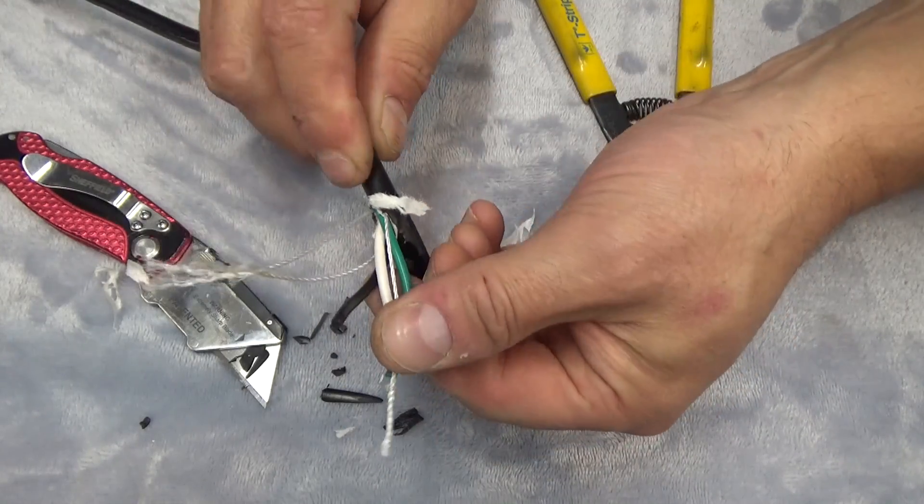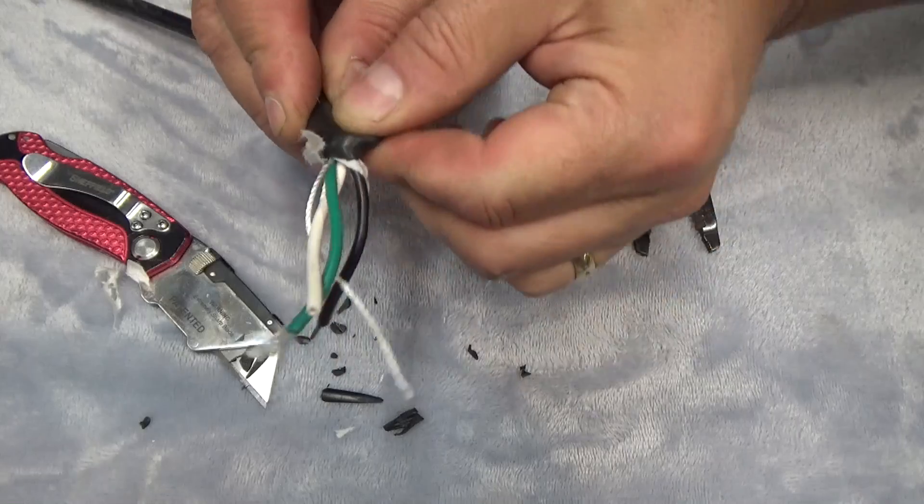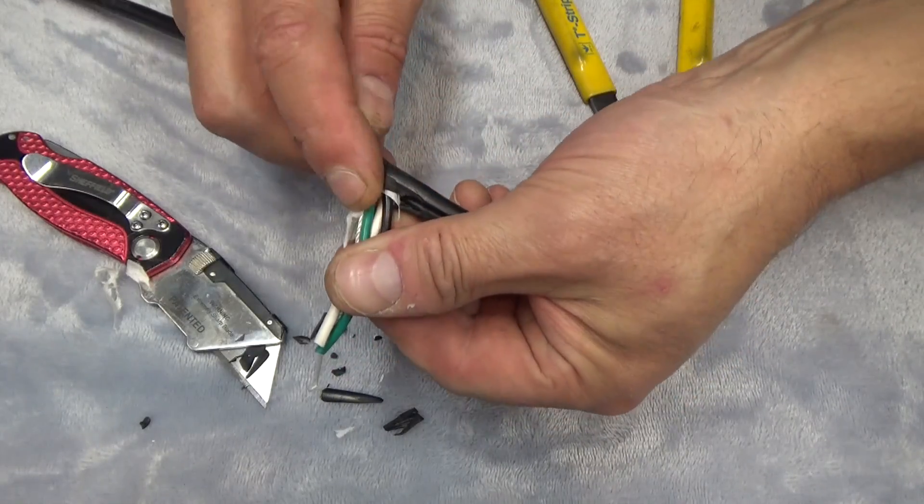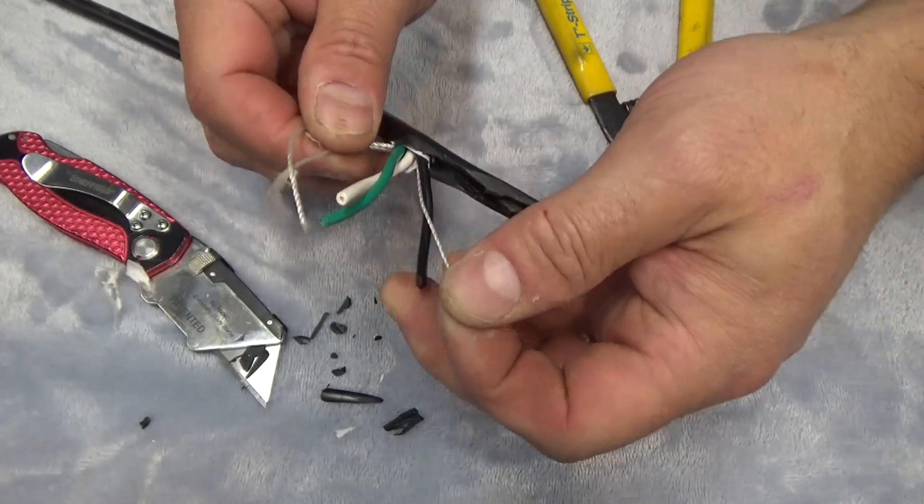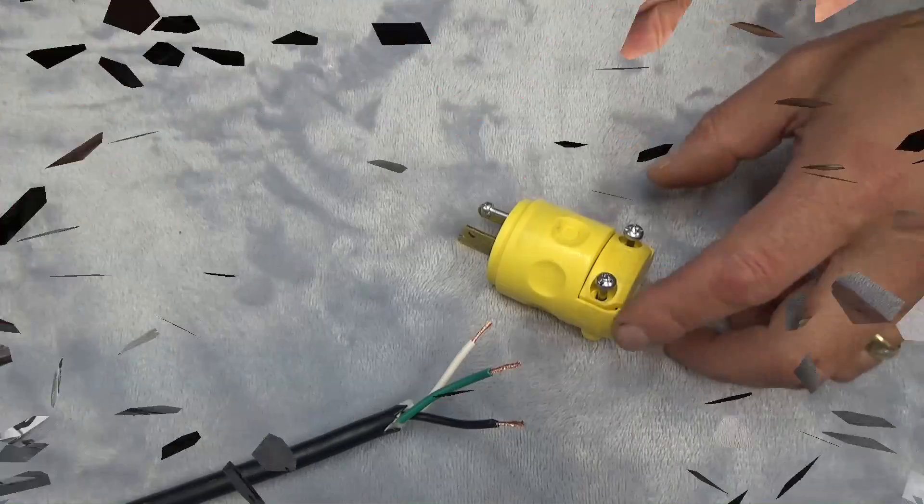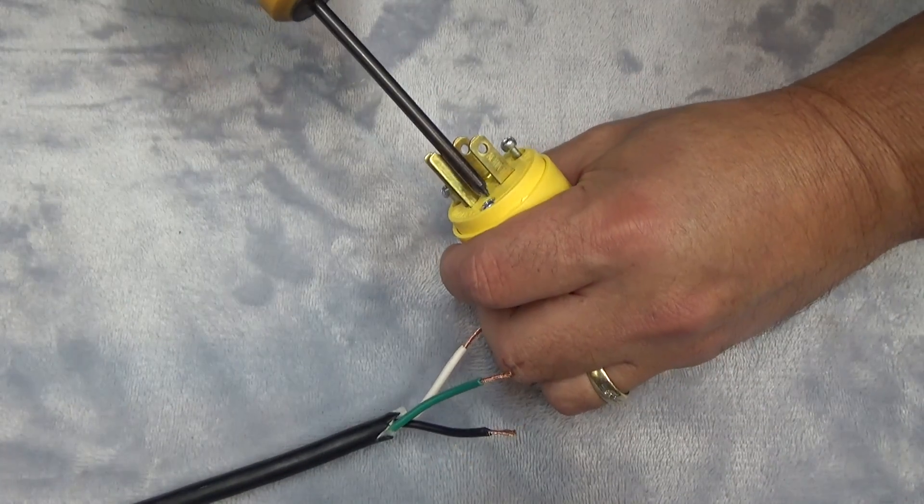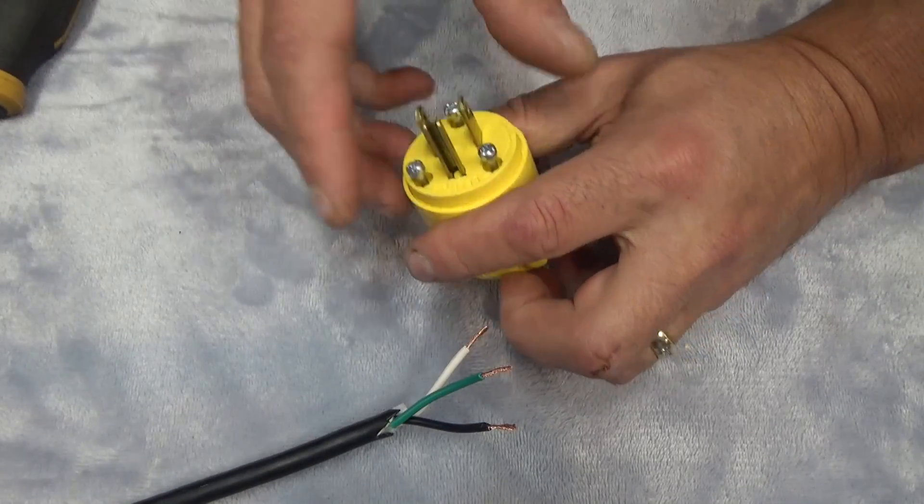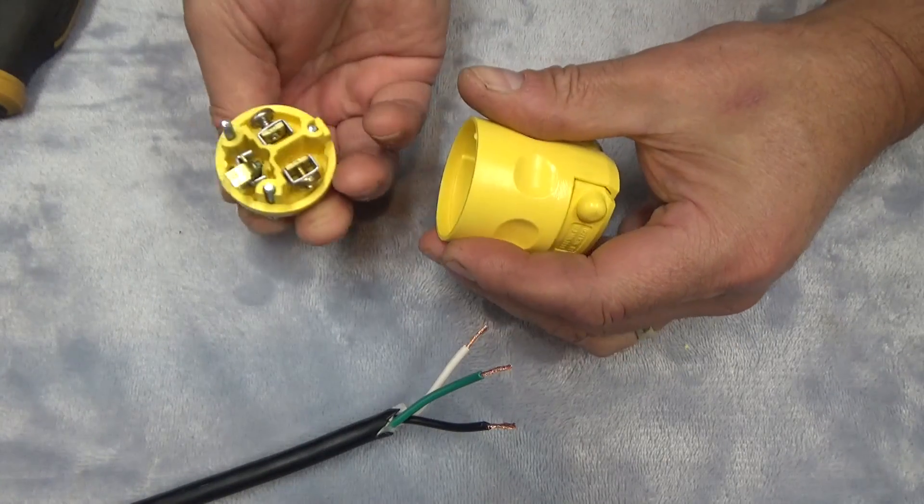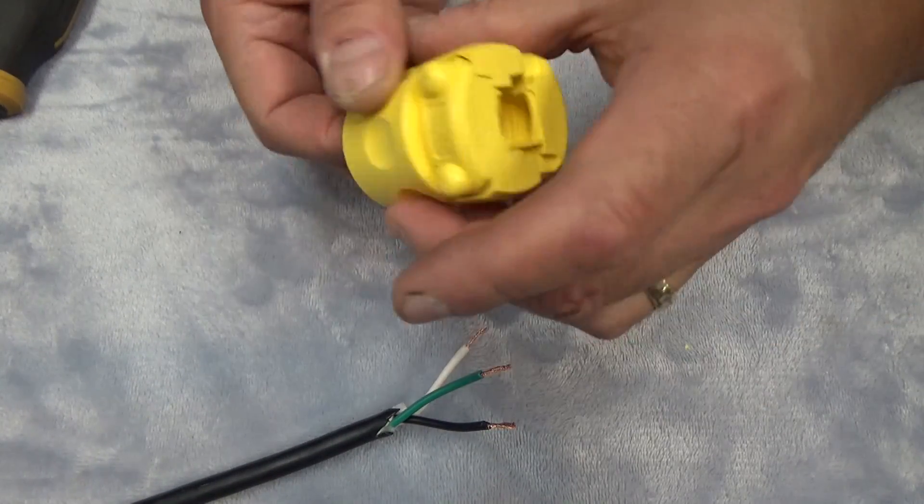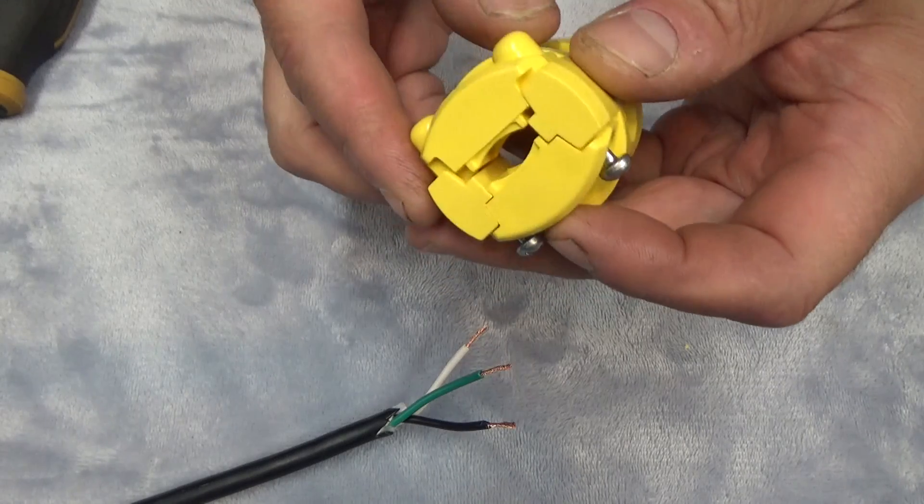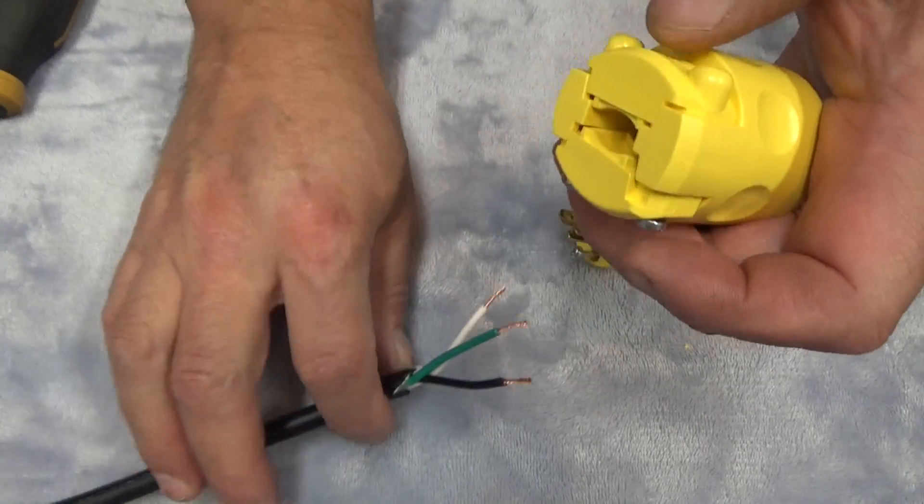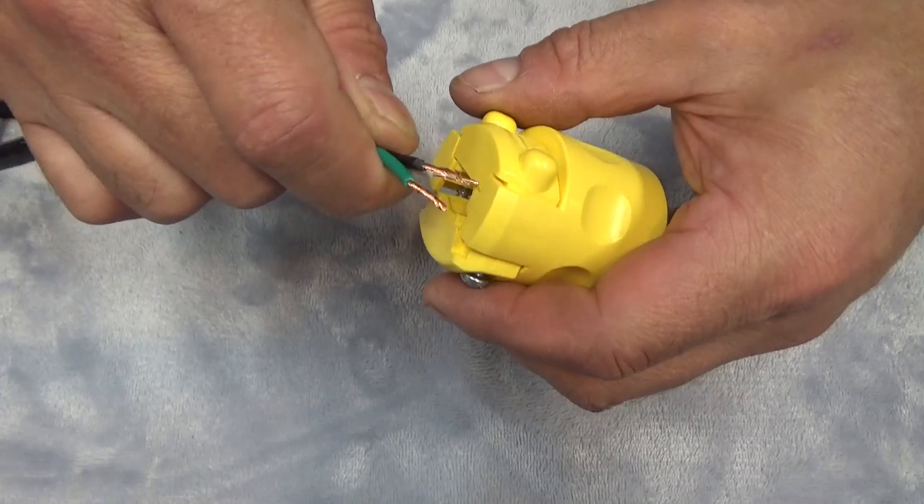Once you get it started, you can kind of pull the wires and it'll tear. You want to be sure that when you slice through this initial shielding that you're not slicing into the wire itself. So on these Leviton replacement plugs, it takes a small Phillips and then this should just pull apart like that.